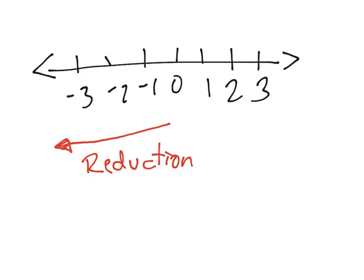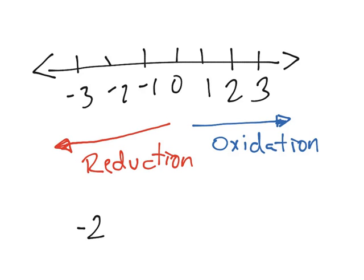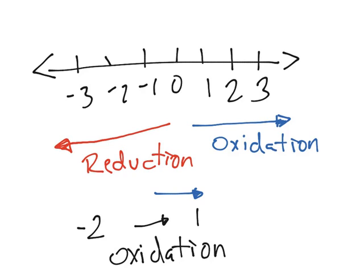Now if you're losing electrons or getting oxidized, you will become more positive, so the oxidation number moves to the right — that's oxidation. For example, if your oxidation number on the reactant side was minus 2 and on the product side it became 1, it is becoming more positive, so it is oxidation. And if your oxidation number was 1 and it went to minus 2, it would be moving to the left, so it is reduction.